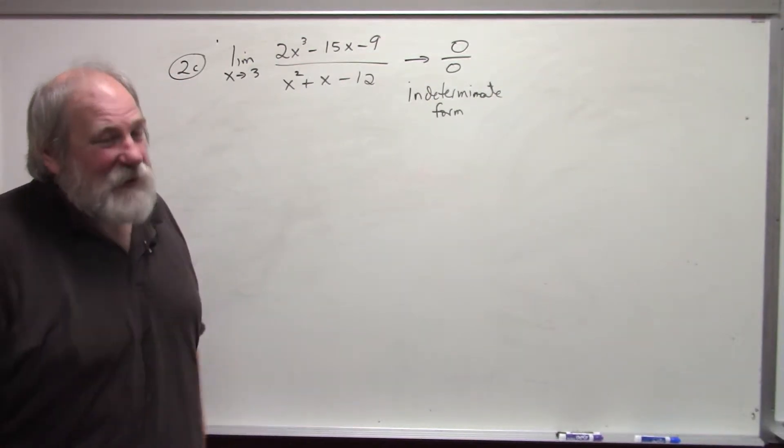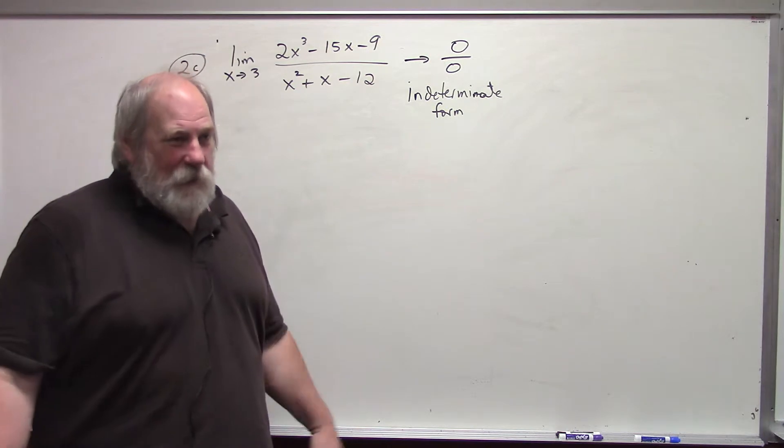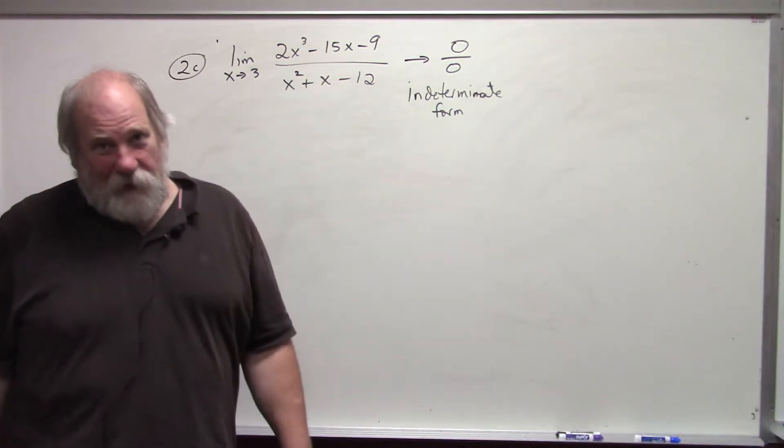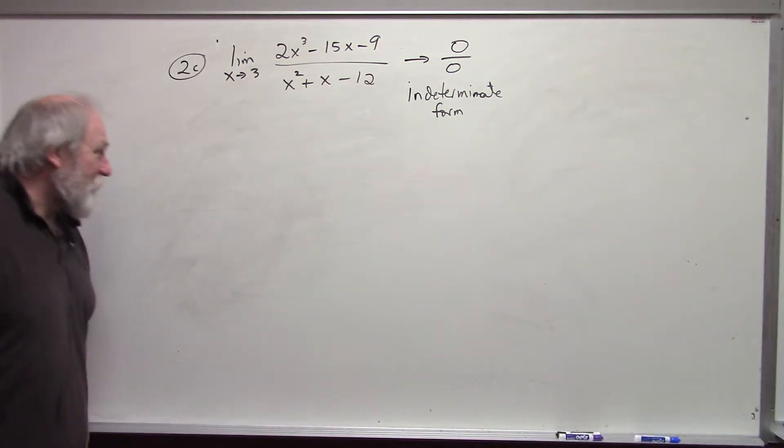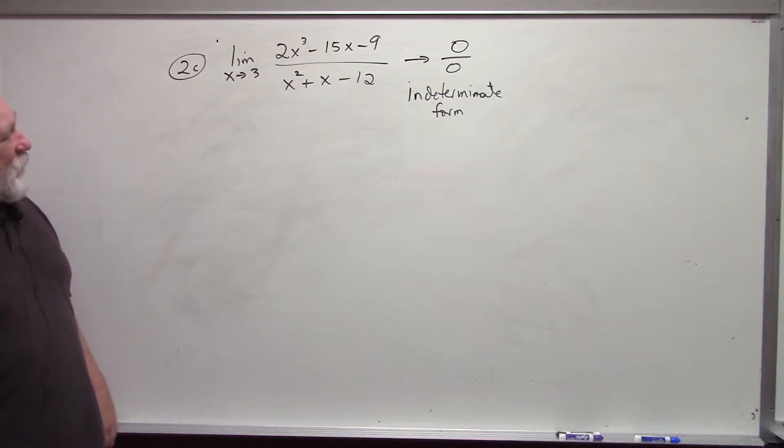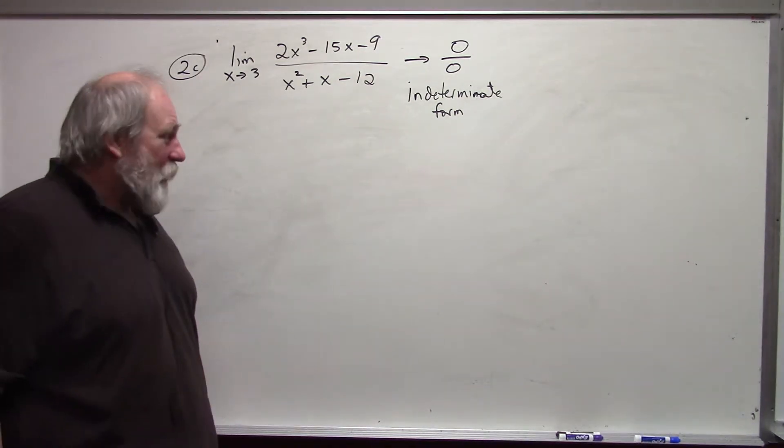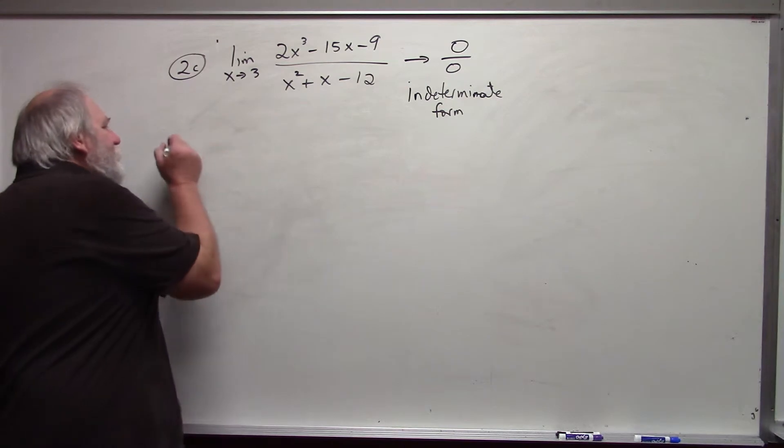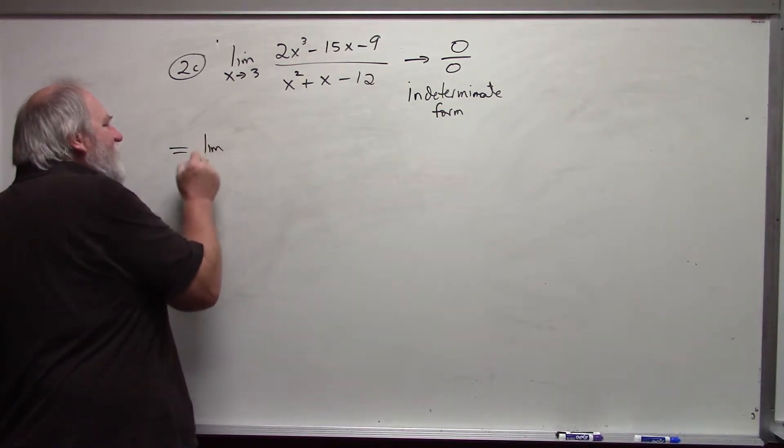Indeterminate form means that you have to do more work to be able to determine what the actual limit is going to be. In this particular situation, the work that we have to do is just basic factoring. I have two polynomials. As x approaches 3, both of these polynomials are approaching 0. That means that x minus 3 has to be a factor of each of the polynomials. So, we will go ahead and factor them.